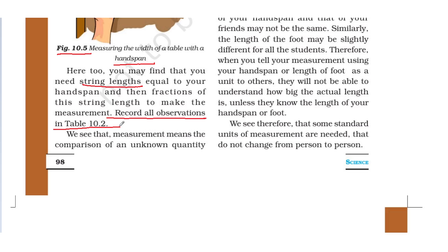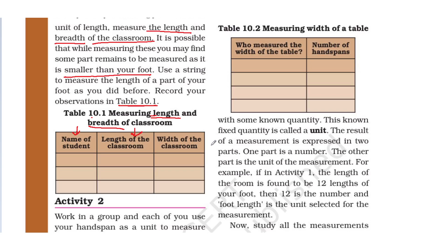We see that measurement means the comparison of an unknown quantity with a known quantity. Measurement का मतलब है — unknown quantity का known quantity के साथ comparison. When the unknown quantity is compared to a fixed known quantity, that fixed quantity is called a unit.